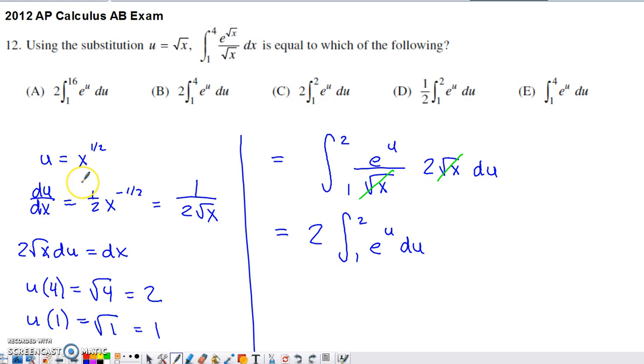So when you do a u substitution, you need to figure out what the relationship between du and dx is. When you take the derivative of the square root of x, or u to the 1 half, you end up with this. If you clean that up a little bit and simplify it, you end up with 1 over 2 times the square root of x.